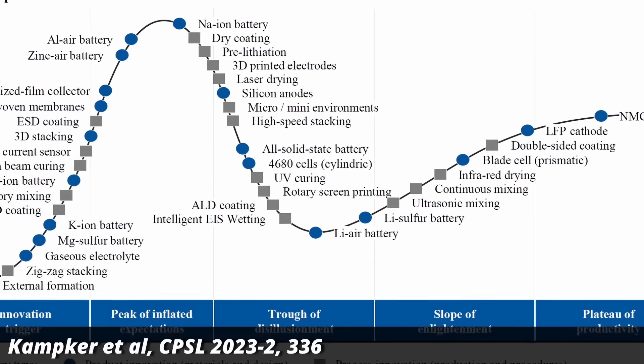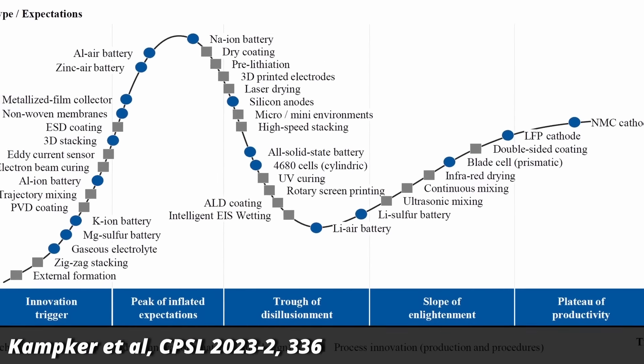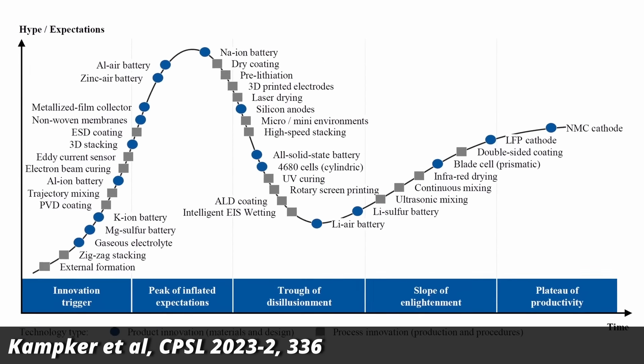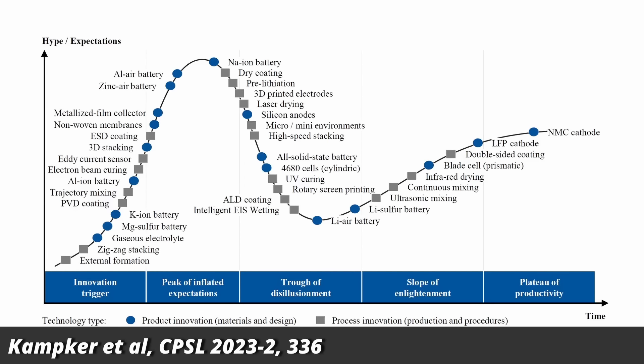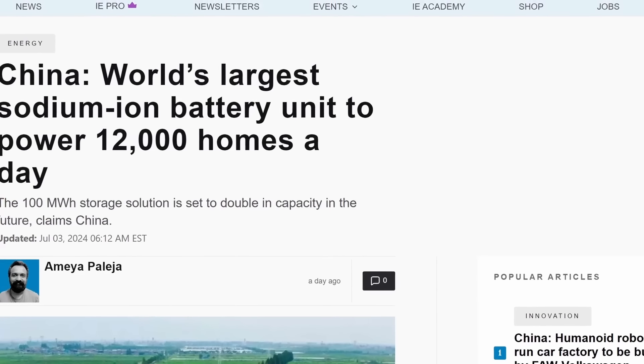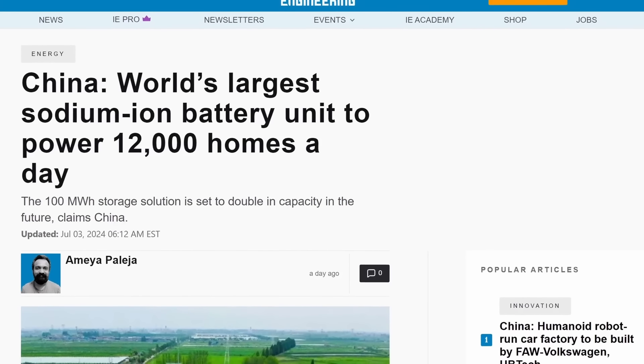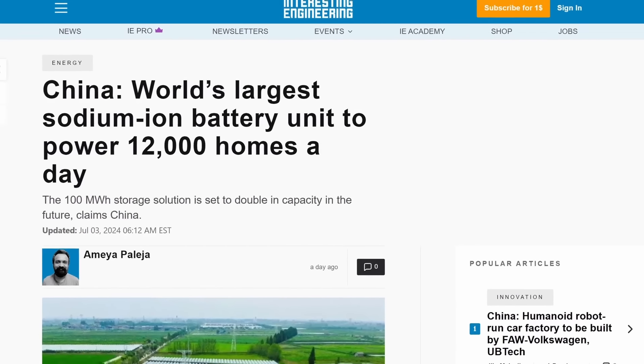They also put these technologies on the hype cycle, which looks like this. To understand this graph, you have to read the horizontal axis as the time-passed invention for each item and not a year. For example, they say that sodium-ion batteries are at peak excitement, but they yet have to go through the trough of disillusionment before hitting the consumer market.